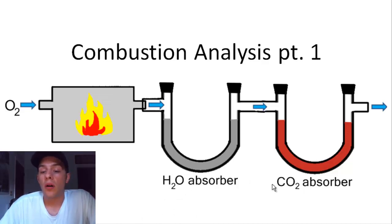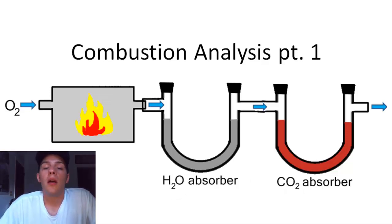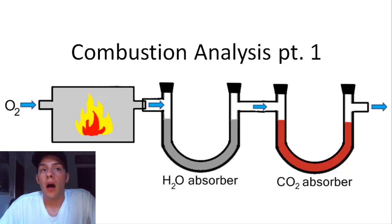Once we find out how much water and carbon dioxide came from that sample, we can calculate how much carbon and how much hydrogen came from that sample, and then we can get a little bit closer to figuring out the chemical formula of that compound.